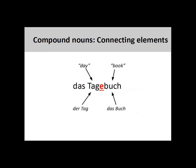Compound nouns are often joined by a connecting element. These elements are either the plural ending of the prior noun in the chain — an -e, -en, or -n — or a genitive case ending, an -s or -es.